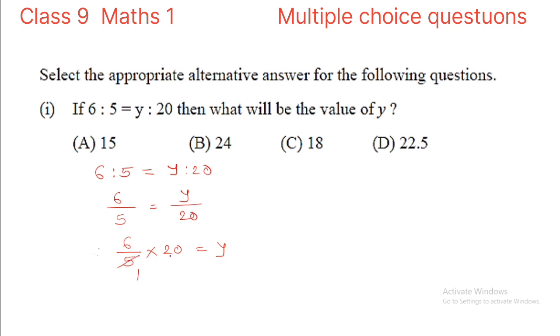So, if we divide 20 by 5, we get 4. Then 6 into 4 equals 24, and that is the value of y, which is given at option B. So option B is the correct alternative.